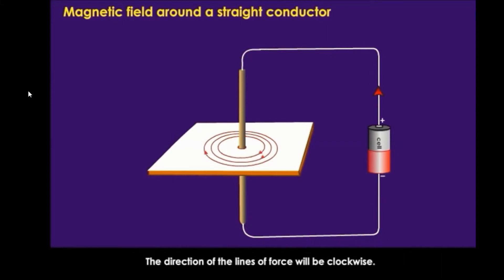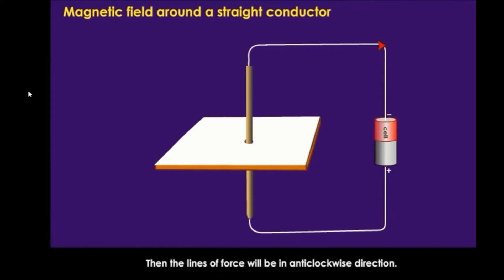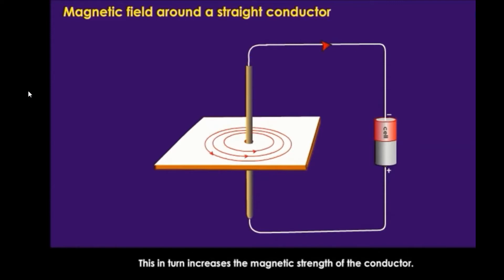It is observed that the lines of force are in the form of concentric circles, and the direction of the lines of force will be clockwise. The experiment is repeated again, but now the current is passed in the opposite direction. If the strength of the current is increased, then the number of lines of force around the conductor also increases, which in turn increases the magnetic strength of the conductor.